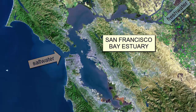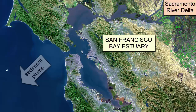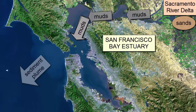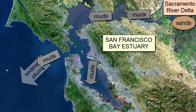This satellite image of San Francisco Bay shows the sediment plume from the Sacramento River, which dumps its sand-sized sediment way up near Sacramento. Its mud-sized sediments, however, stay in suspension and settle in shallow, low-energy tidal wetlands along the edges of the estuary.